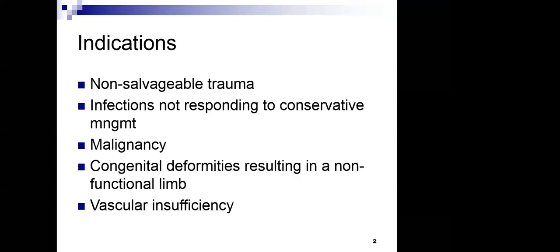Malignancy is another indication — most commonly osteosarcoma. The most common site is the upper end of the tibia. Even 20 years ago, the only option was amputation, but now they can remove only the affected part of the bone and salvage it with bone cement. Widespread malignancy where salvage is not possible remains an indication for amputation.